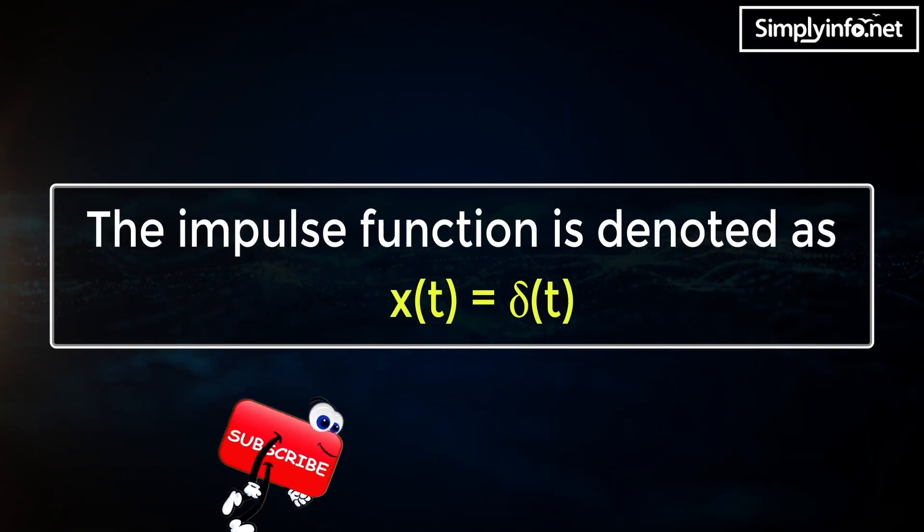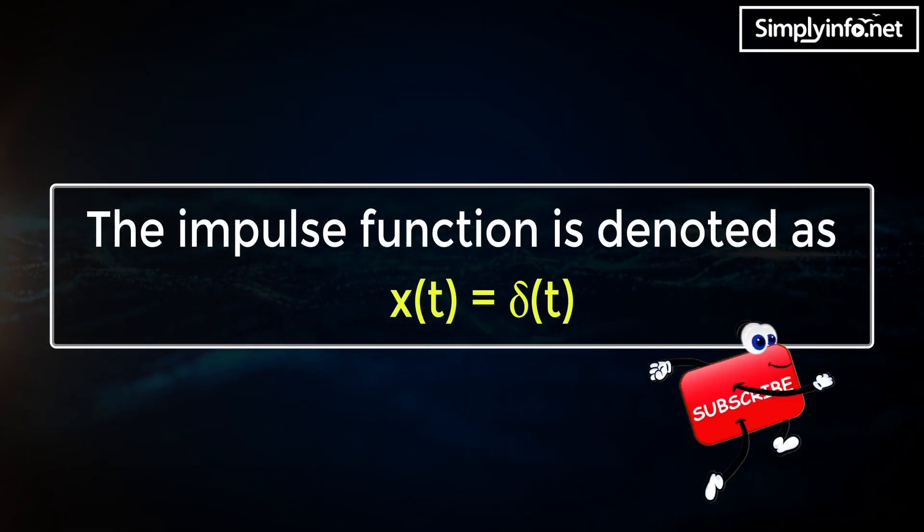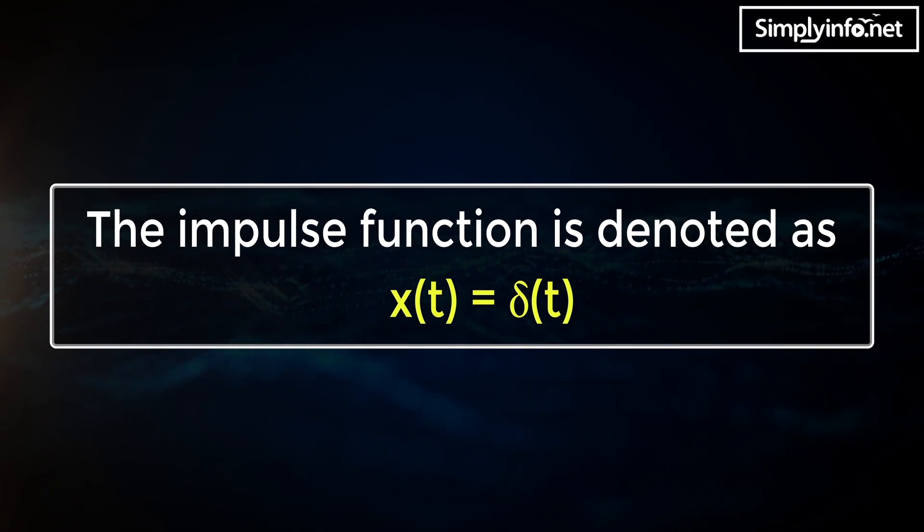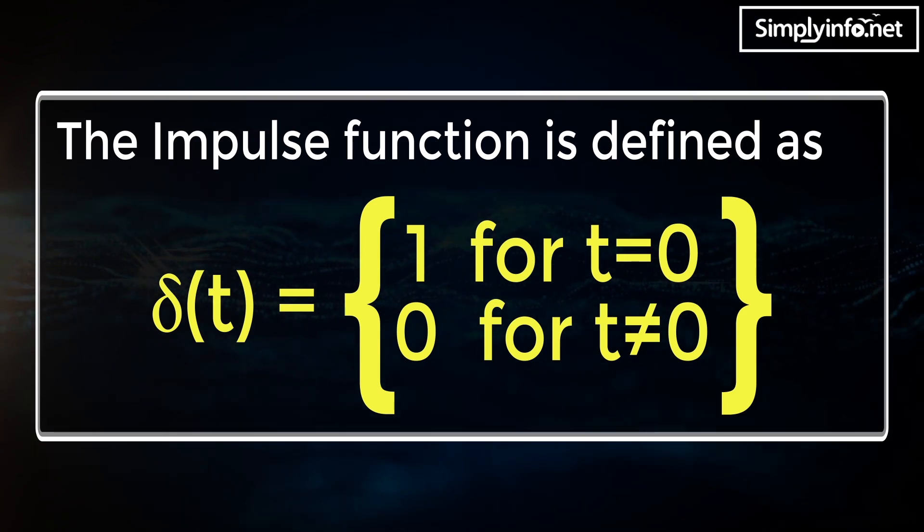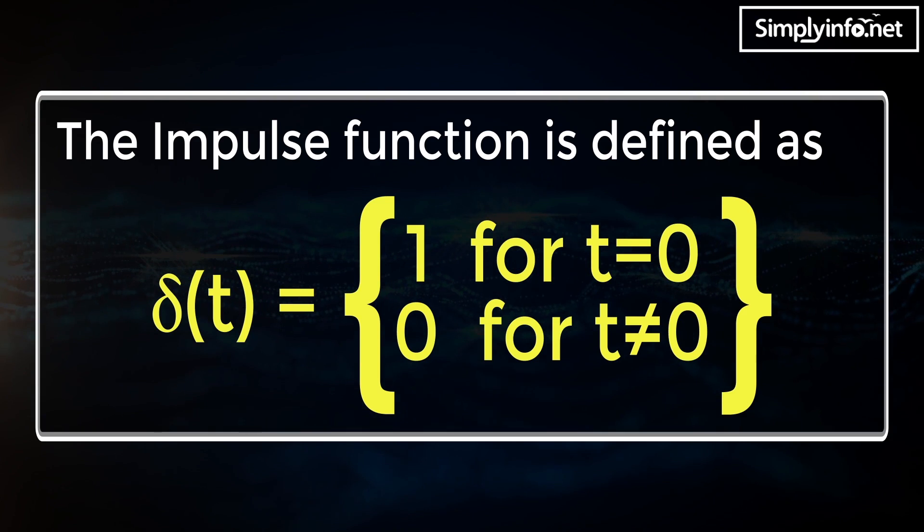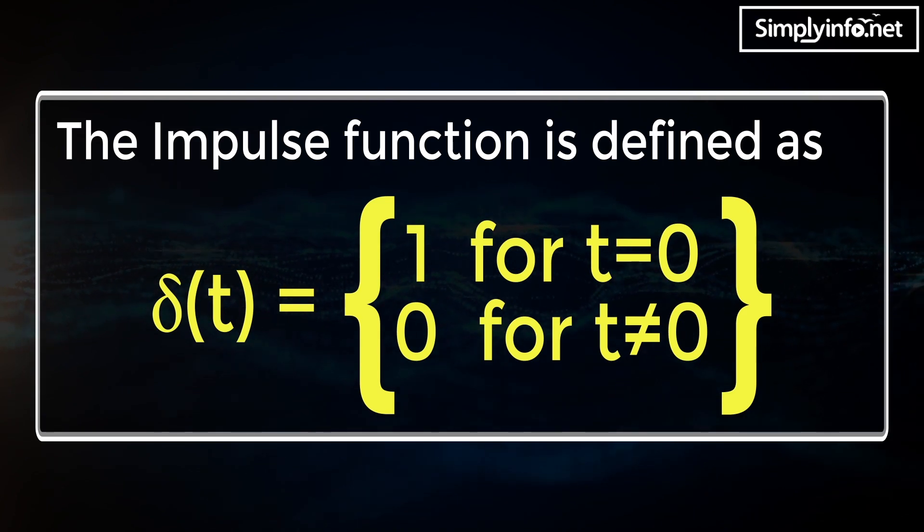The impulse function is denoted as x of t which is equal to delta of t. The impulse function is defined as delta of t equals 1 where t equals 0, delta of t equals 0 where t is not equal to 0.